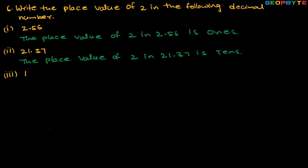The third one is 10.25. We need to write the place value of 2 in 10.25. Since 2 comes after the decimal point, it is at the tenths place. The place value of 2 in 10.25 is tenths.